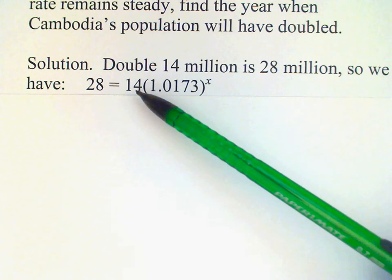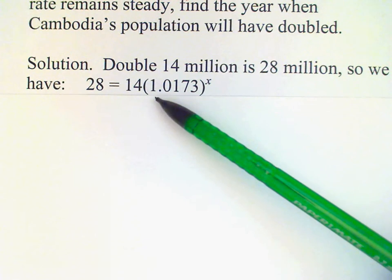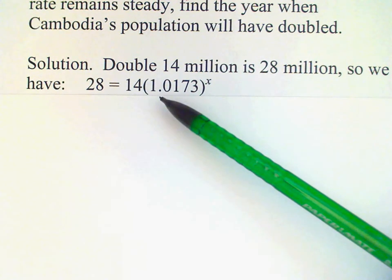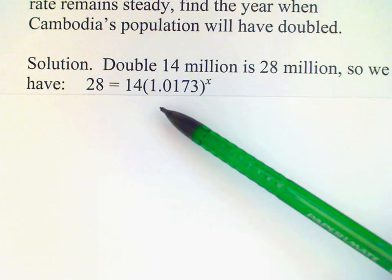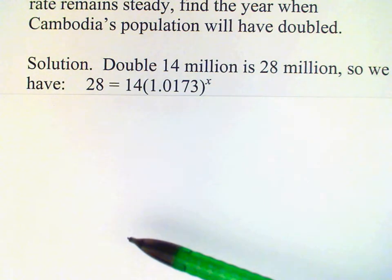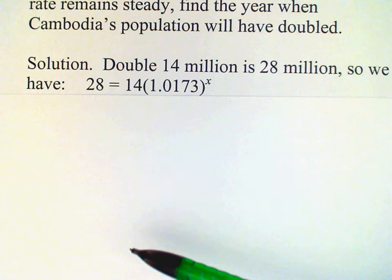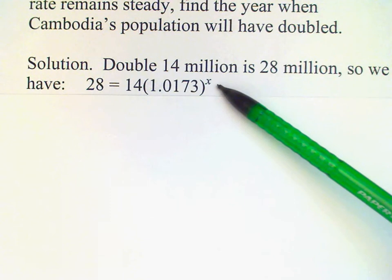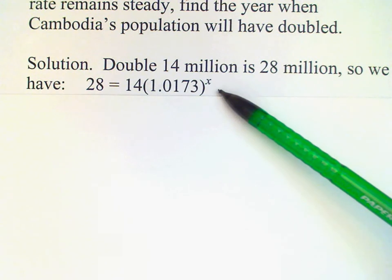In this case it's an initial population, that's my a. And my b, that's 1 plus the growth rate. Since we have 1.73%, convert that to a decimal 0.0173 and add 1, we get the 1.0173. And then x here is unknown in this problem because that's what we're trying to find—we're trying to find the time that it will take for this population to double.